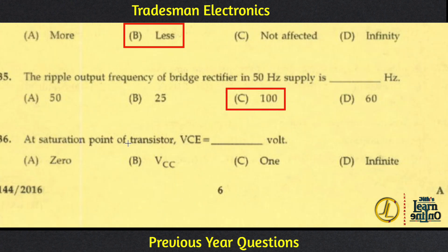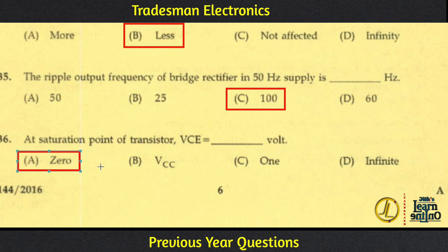At the saturation point of a transistor, VCE is equal to 0 volts. At saturation, the maximum current flows in the collector circuit and the voltage drop VCE is at its minimum, which is 0V. Option A is the answer.